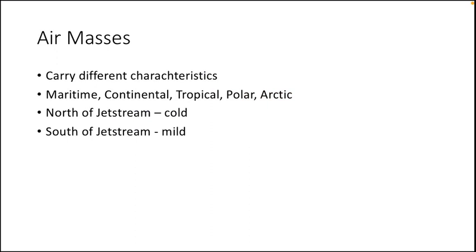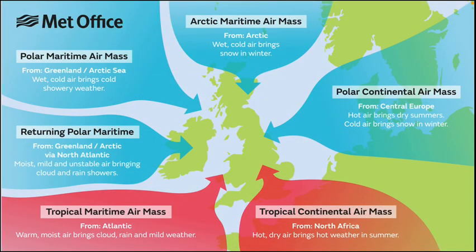Linking air masses to the jet stream: if you're north of the jet stream, air masses tend to be cold, and if you're south of the jet stream, they tend to be mild. An air mass carries different characteristics depending on where its source region is. For example, if an air mass comes from a snowy region of Canada or Siberia, it's going to be cold and quite dry. If the source region is from the Atlantic, where it's very moist, the air mass will be moist. There are generally tropical, polar, and arctic air masses from either maritime or continental source regions. This diagram from the Met Office shows the different types of air mass — generally from the north and east it's cold, and from the south it's warm, and moist or dry depending on whether it's been over ocean or land.